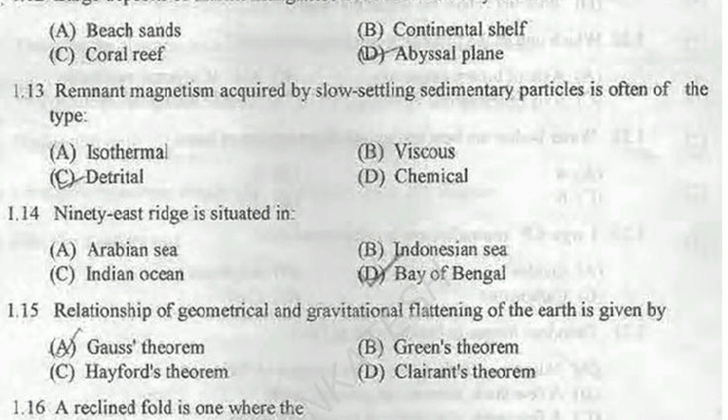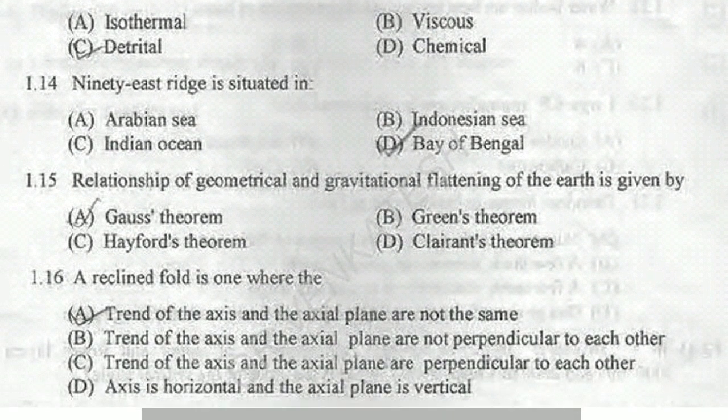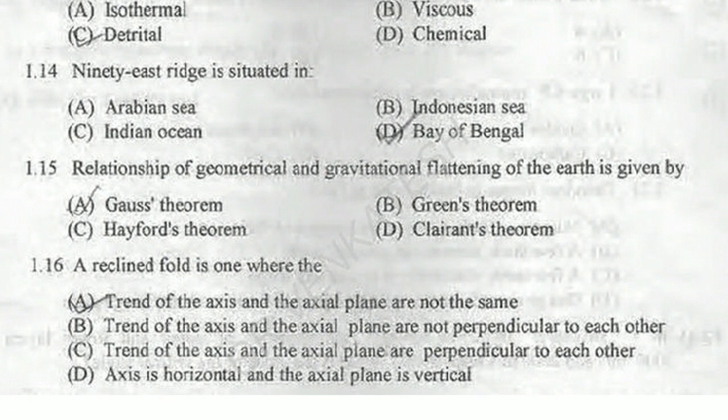Looking at the four options for remanent magnetism: thermal, isothermal — these have nothing to do with remanent magnetism in a sedimentary environment, since you cannot acquire that temperature. Viscous remanence is a force unrelated to this context. The 90 East Ridge is situated in the Arabian Sea, Indonesian seas, Indian Ocean, or Bay of Bengal? This question has been repeated many times in the exam — Bay of Bengal is the correct answer.